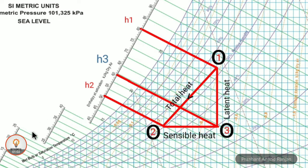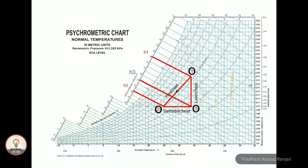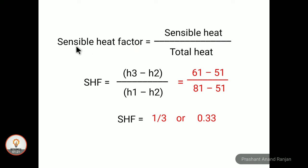Now by going by the definition of sensible heat factor, we can easily calculate the sensible heat factor value, which is sensible heat upon total heat. Sensible heat is equal to H3 minus H2, which is enthalpy at point 3 minus enthalpy at point 2, divided by H1 minus H2, which is enthalpy at point 1 minus enthalpy at point 2, which comes out to be 1 by 3 or 0.33.